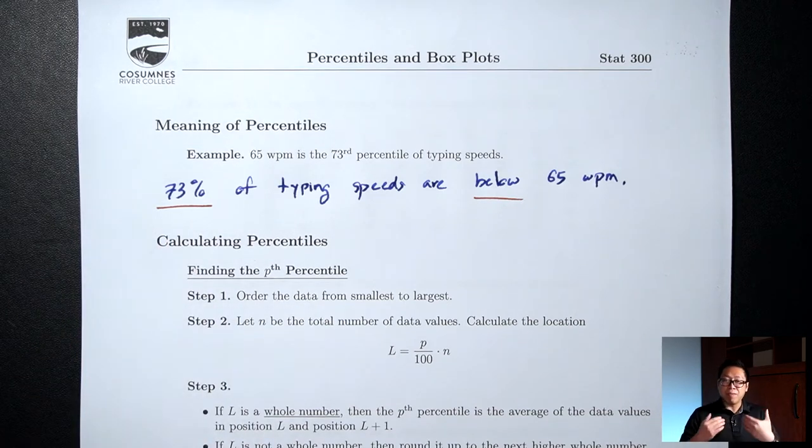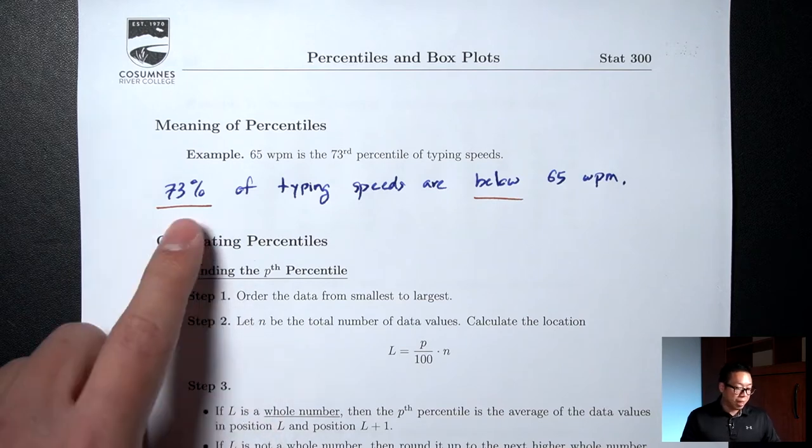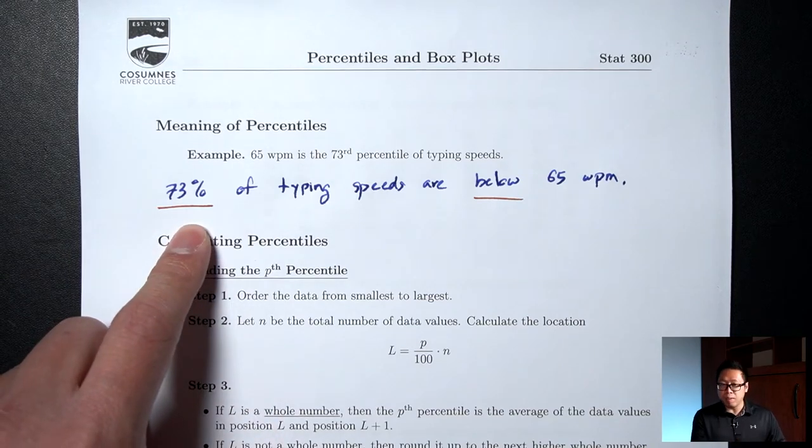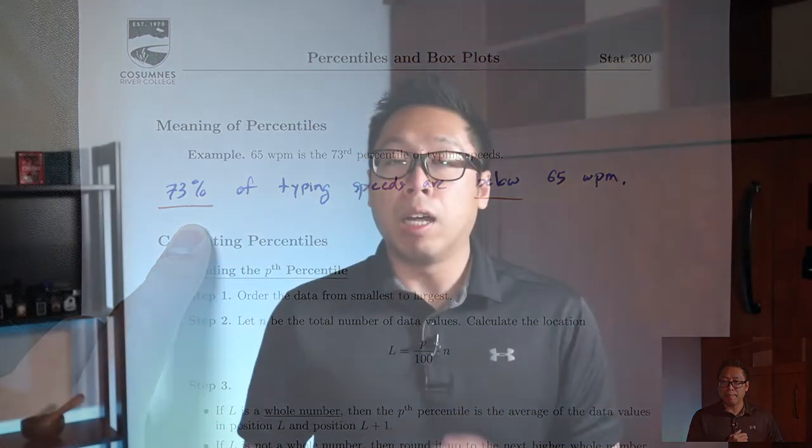Once again, percentiles tell you what percent is below. Another way to interpret this is to say that my typing speed is higher than 73% of everybody who took this typing test, which means that I'm faster than 73% of everybody who took this typing test.